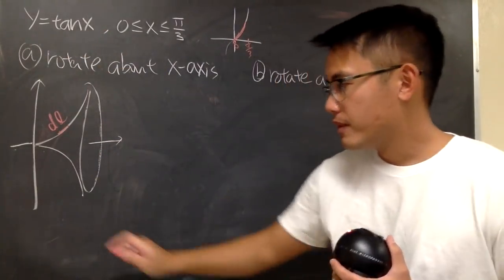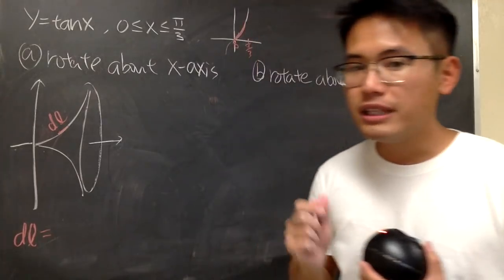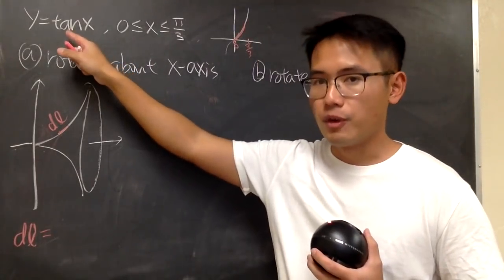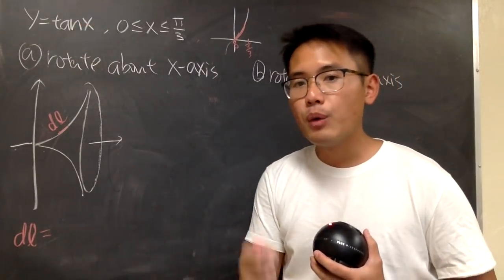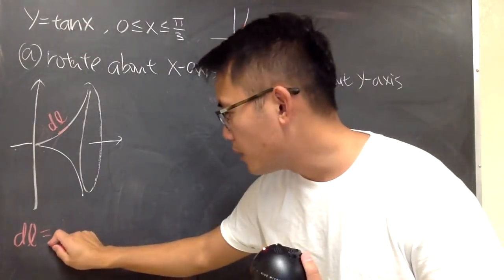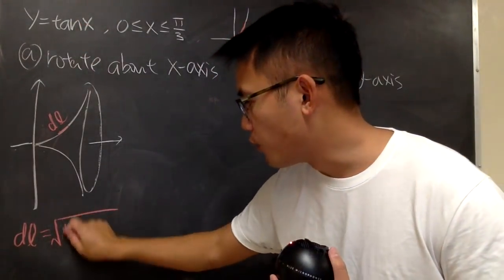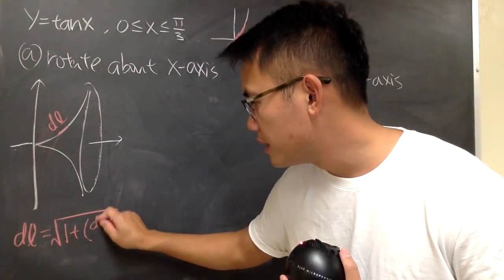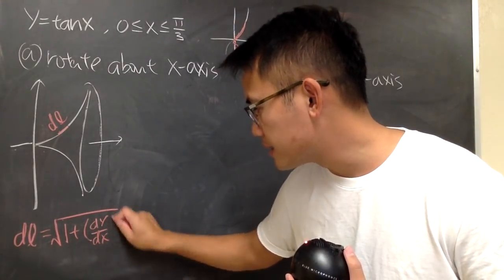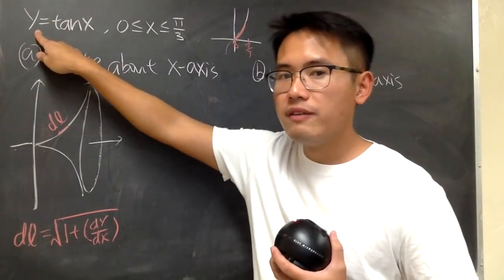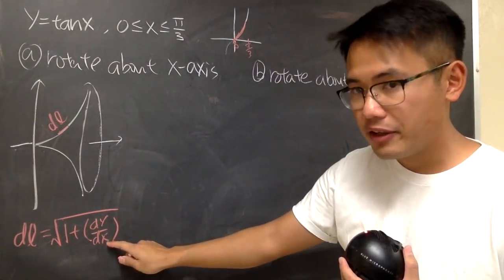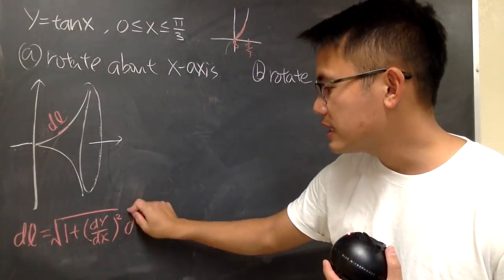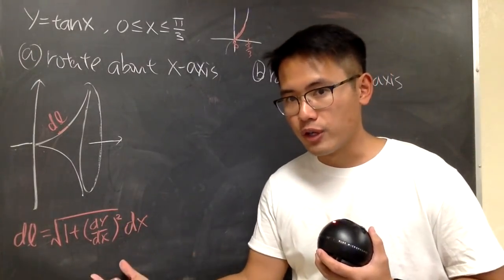Now, recall, to get dl, it actually depends on the given information. Since we are given y as a function of x, I will use the following: dl is the square root of 1 plus parentheses dy dx squared. Once again, if you are given y as a function of x, use dy dx right here and square, and the outside is the dx.